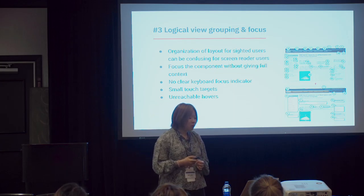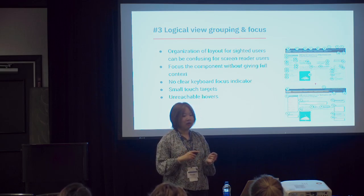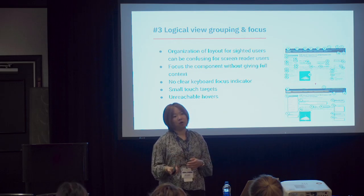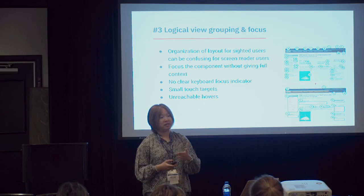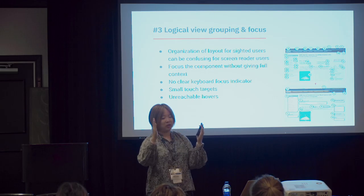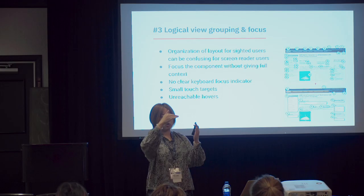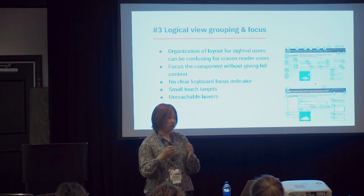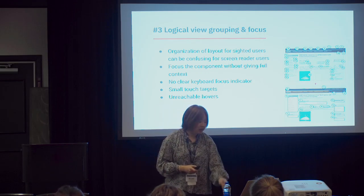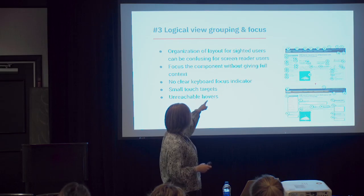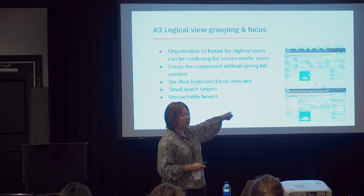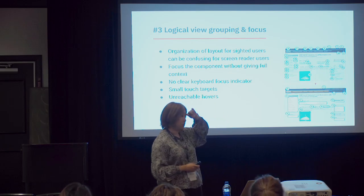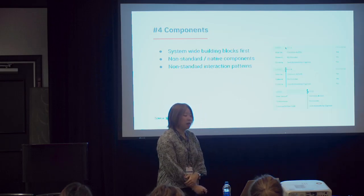Unreachable hovers and tooltips are also problematic. When a hamburger menu opens, many products fail to move focus into the side menu — the screen reader goes through all the background content first. IBM redesigned their site: before the fix, it required 30+ tab stops to navigate their content; after fixing the grouping and reading logic, they reduced it to under 15 tab stops.